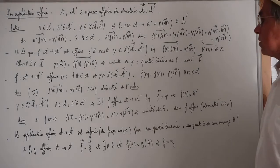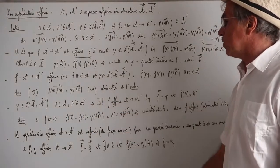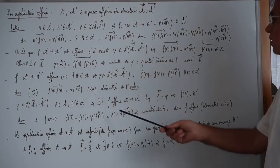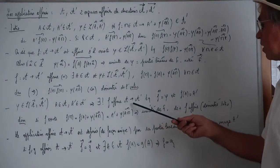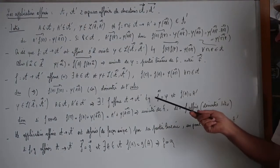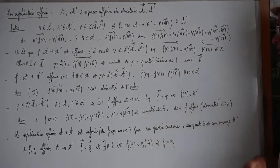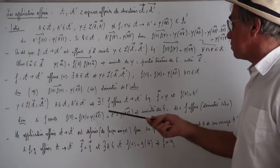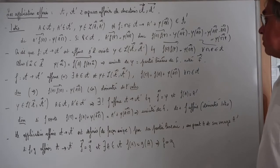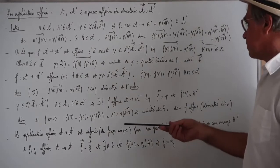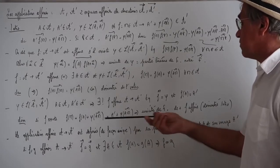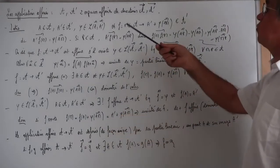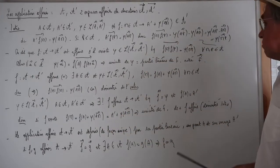Propriété suivante : étant donné Φ une application linéaire de la direction de A vers la direction de A', A un point de A, et A' un point de A', il existe une unique application affine F de A vers A' vérifiant : la partie linéaire de F est égale à Φ et F(A) = A'. Démonstration : si F existe, F(M) doit être égale à F(A) + Φ(AM), donc égale à A' + Φ(AM), ce qui assure l'unicité de F. Et F défini comme ça est bien affine, retour à l'introduction.